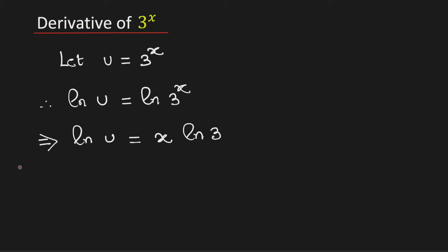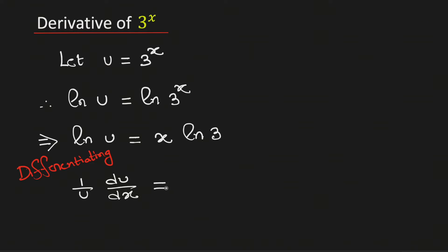Now differentiating both sides with respect to x, this will be equal to 1 over u times du/dx, obtained by the chain rule of derivatives. As ln 3 is a constant, the derivative of the right hand side will be equal to ln 3.